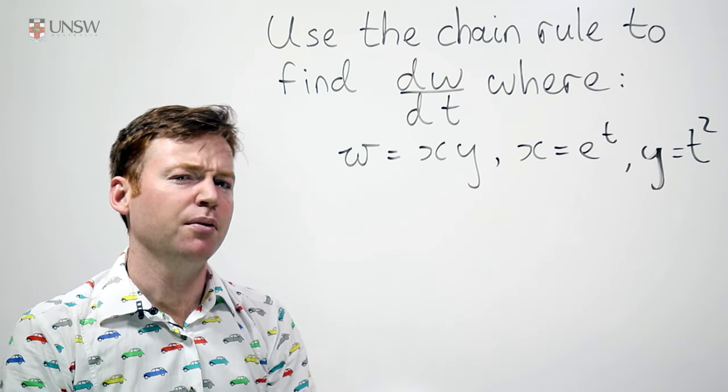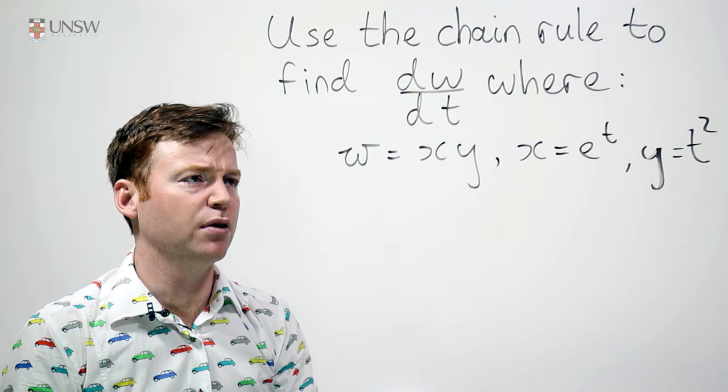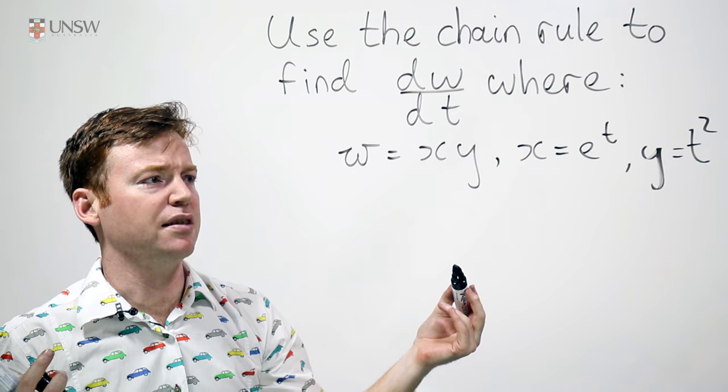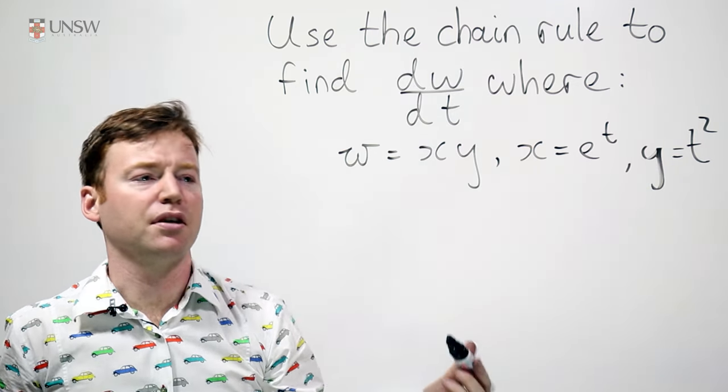You may be wondering, why would I use the chain rule for this? Or even how could I use the chain rule for this? Because w is just e to the t times t squared, so clearly I could just find this using the product rule.